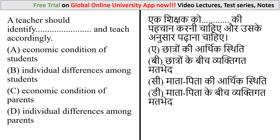Next question: a teacher should identify what and teach accordingly? The options are: (a) economic condition of the student, (b) individual differences among students, (c) economic condition of the parent, and (d) individual differences among the parents. Economic condition of a student does not matter in teaching, because in a school or college every student is treated equally. Individual differences among parents also do not matter here.